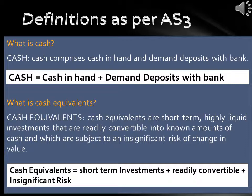What is cash equivalents? Cash equivalents are short-term, highly liquid investments that are readily convertible into known amounts of cash, and which are subject to an insignificant risk of change in value. So: Cash Equivalents = Short-term investments + Readily convertible + Insignificant risk.